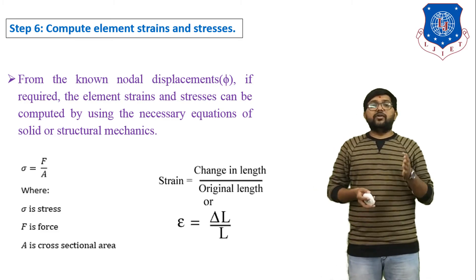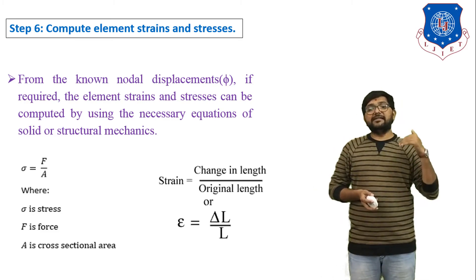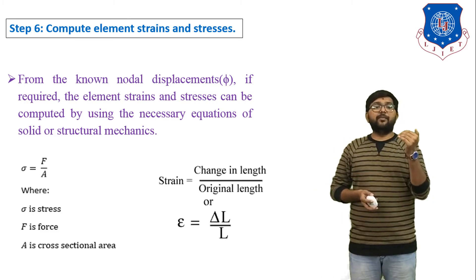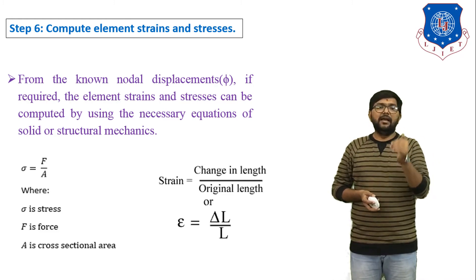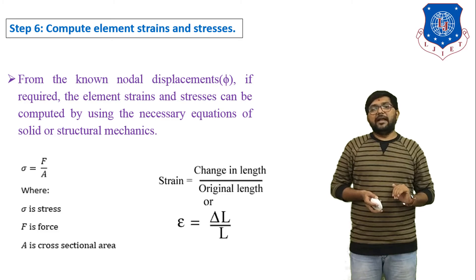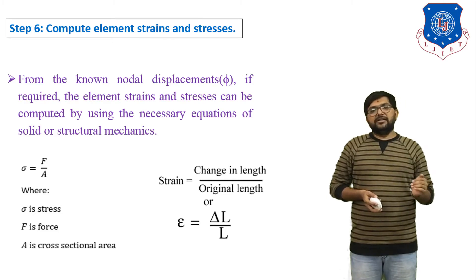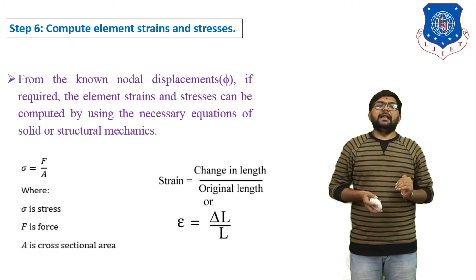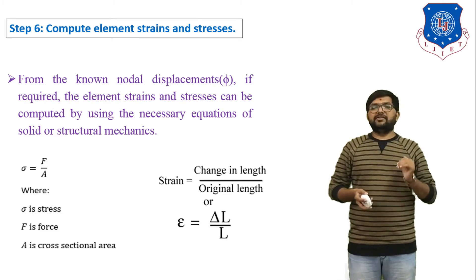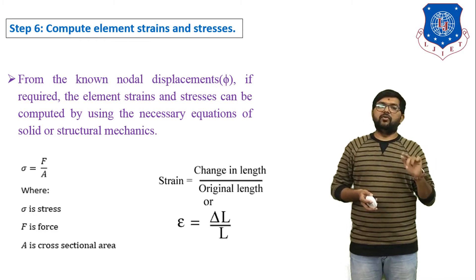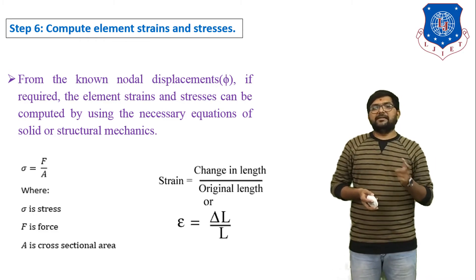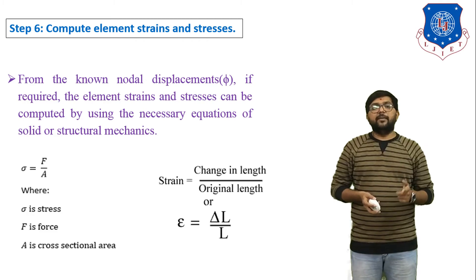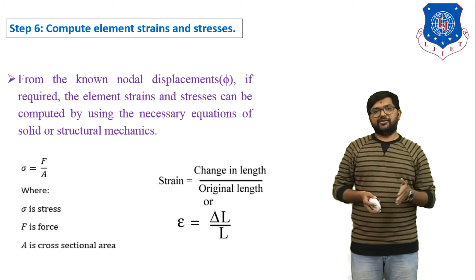And strain: epsilon equals delta L divided by L, meaning change in length over original length. Epsilon is the strain, delta L is the change in length, and L is the original length. That completes step number six — compute element strain and stress.